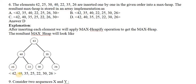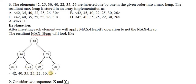Now we want to write this max heap data in array format. From top to bottom procedure, left to right: 42, 40, 35, and then 25, 22, 30, 26. This is placed in option D, so option D is correct.